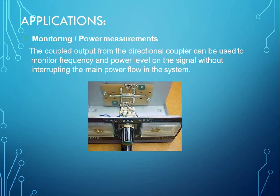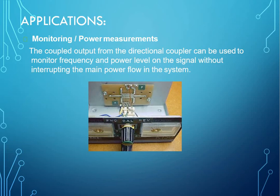Directional coupler has many applications. The first is monitoring or power measurement. The coupled output from the directional coupler can be used to monitor frequency and power level on the signal without interrupting the main power flow in the system. The next main application is frequency measurements, where signal leveling could be done, reflection coefficient measurements could be done with the same setup by using a directional coupler with frequency inline measurements, that is signal sampling, signal injection, and VSWR measurements.